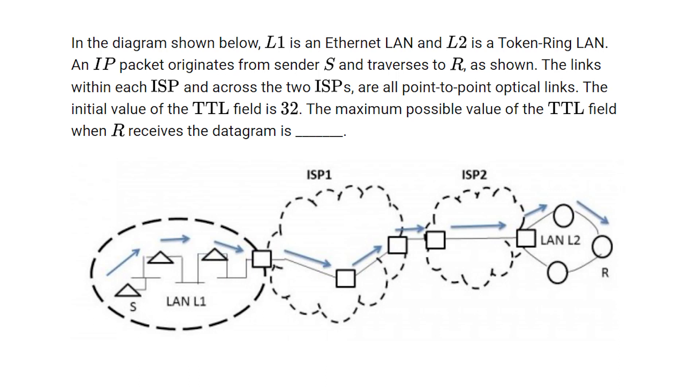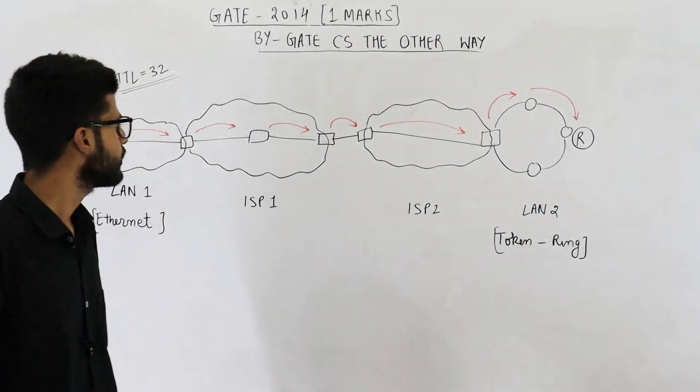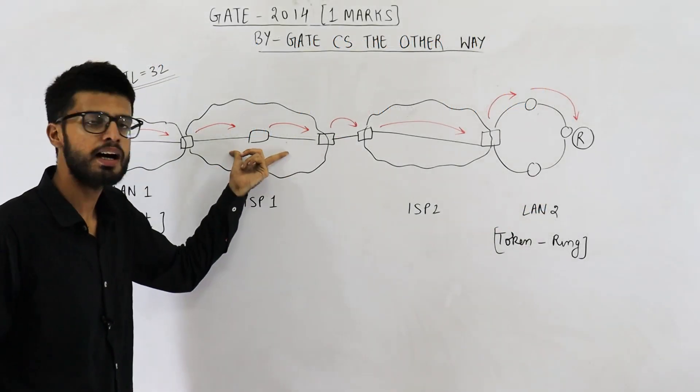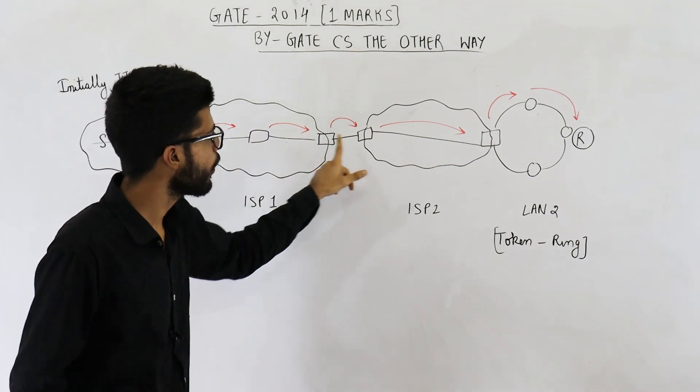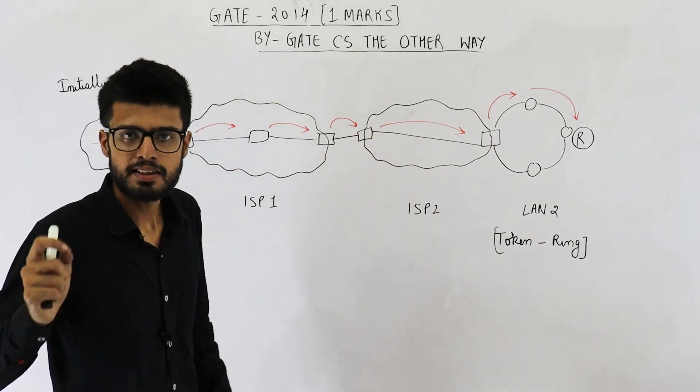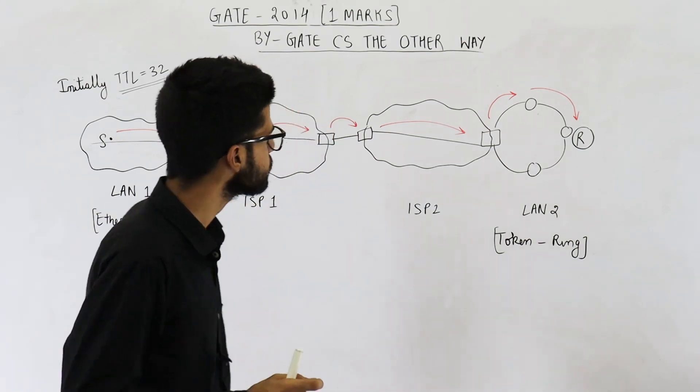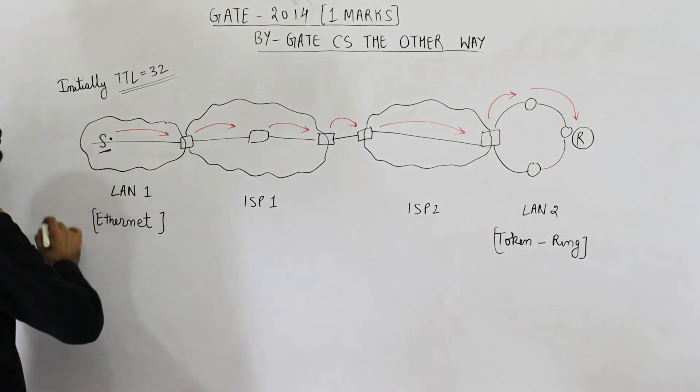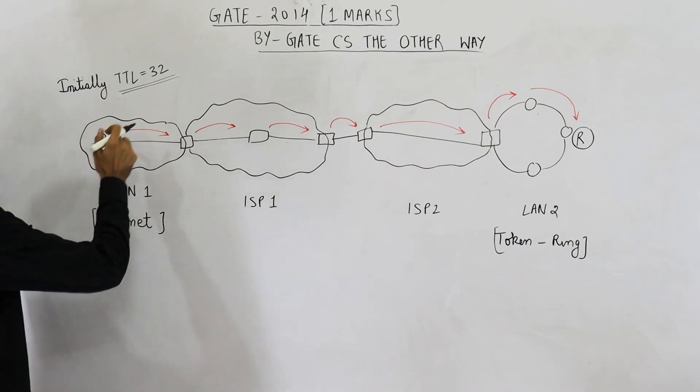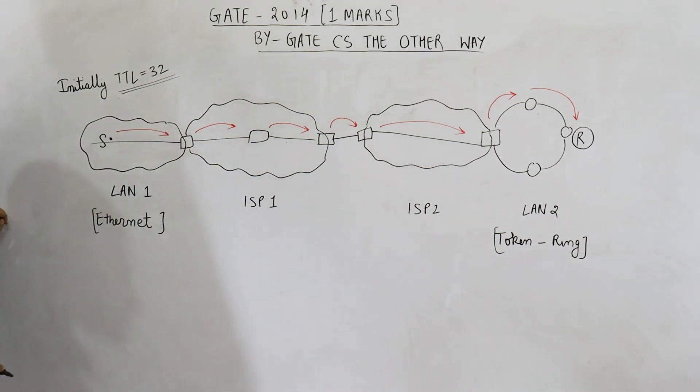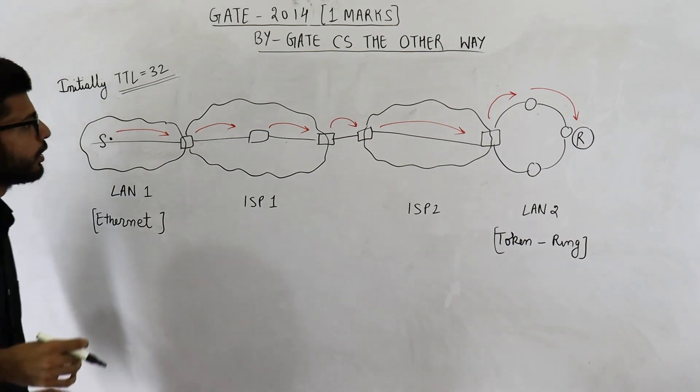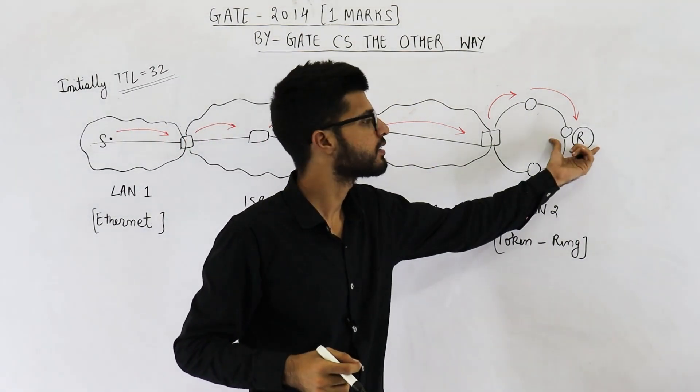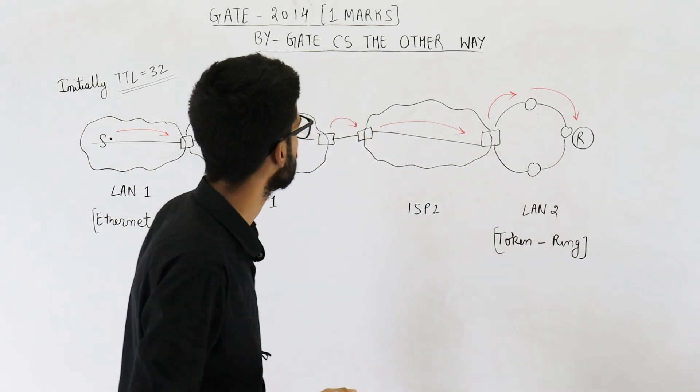Also, just have a look at this diagram. In the question, it is mentioned that all of these links, the links within an ISP and across two ISPs, these links, they are point to point links. They are saying, if the source S while preparing the packet writes the value of TTL equal to 32, what is the maximum possible value of TTL when receiver R receives the packet? Let's find it out.